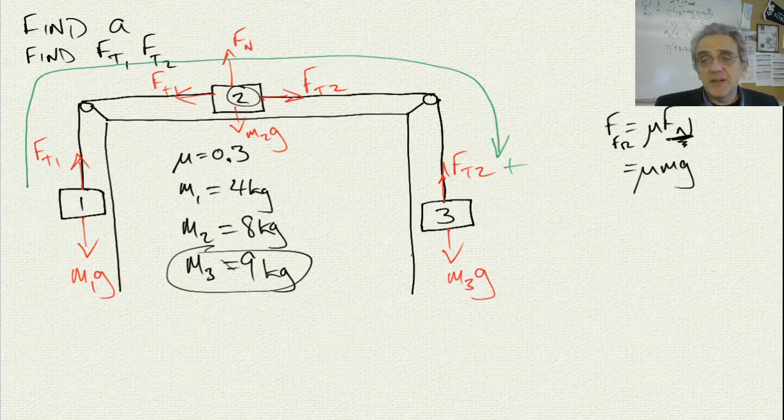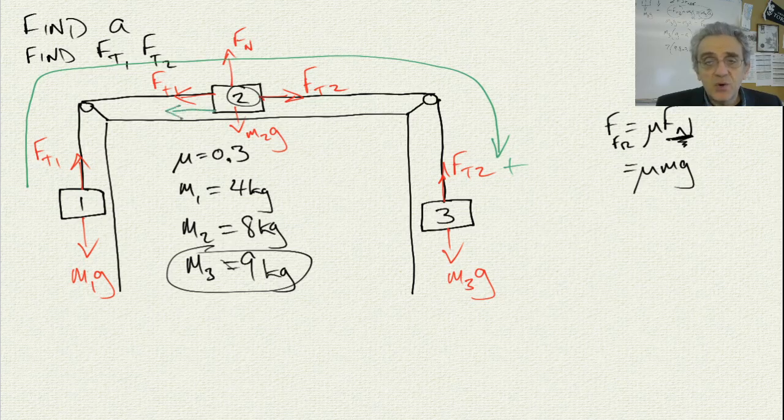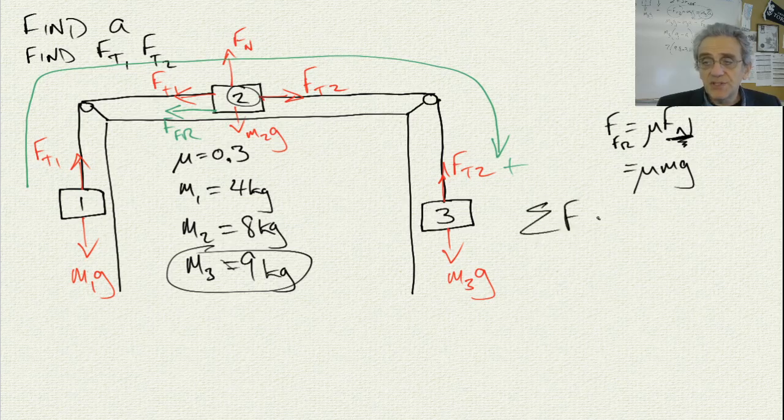Therefore, let me change colors once again, and I'll choose my direction like this. That's my path for my positive direction. Now I've decided number 3 is going down, number 2 is going to the right, and number 1 is going up. Now, if that's the direction of motion, now and only now can I draw my friction force on number 2, which is the only one that has friction. I'll even do that in green so that it stands out. So now I know that if it's moving to the right, therefore, I know my friction force is to the left.